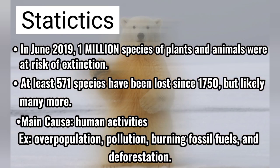Statistics: In June 2019, one million species of plants and animals were at risk of extension. At least 571 species have been lost since 1750, but likely many more. The main cause is human activities, such as overpopulation, pollution, burning fossil fuels, and deforestation.